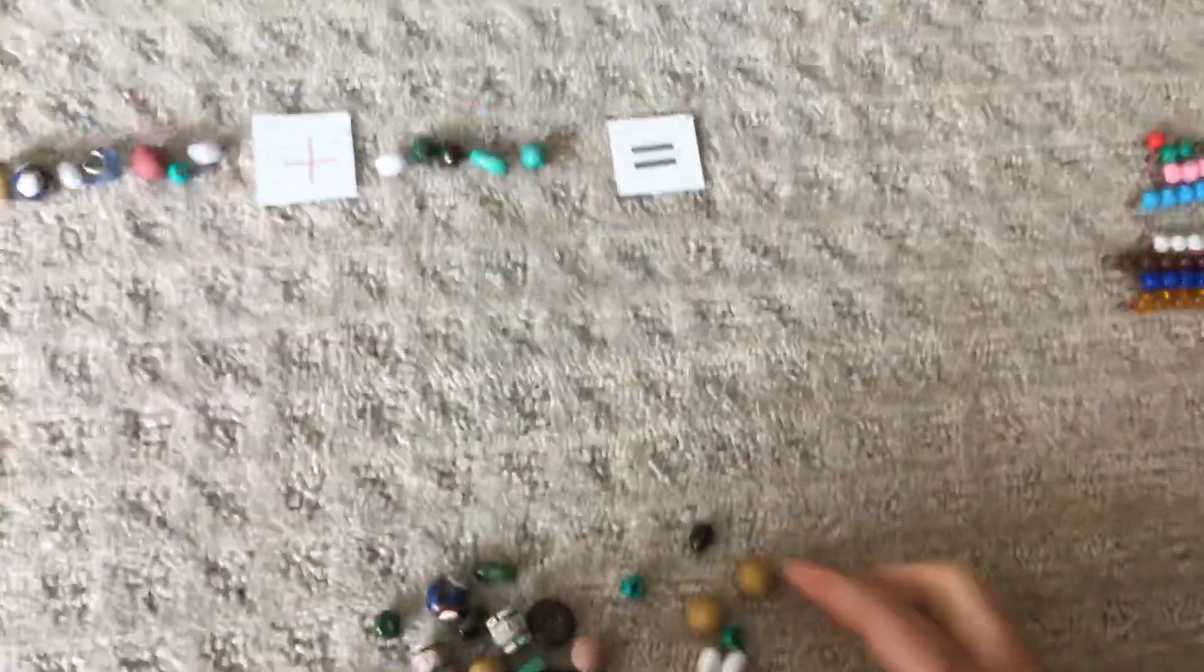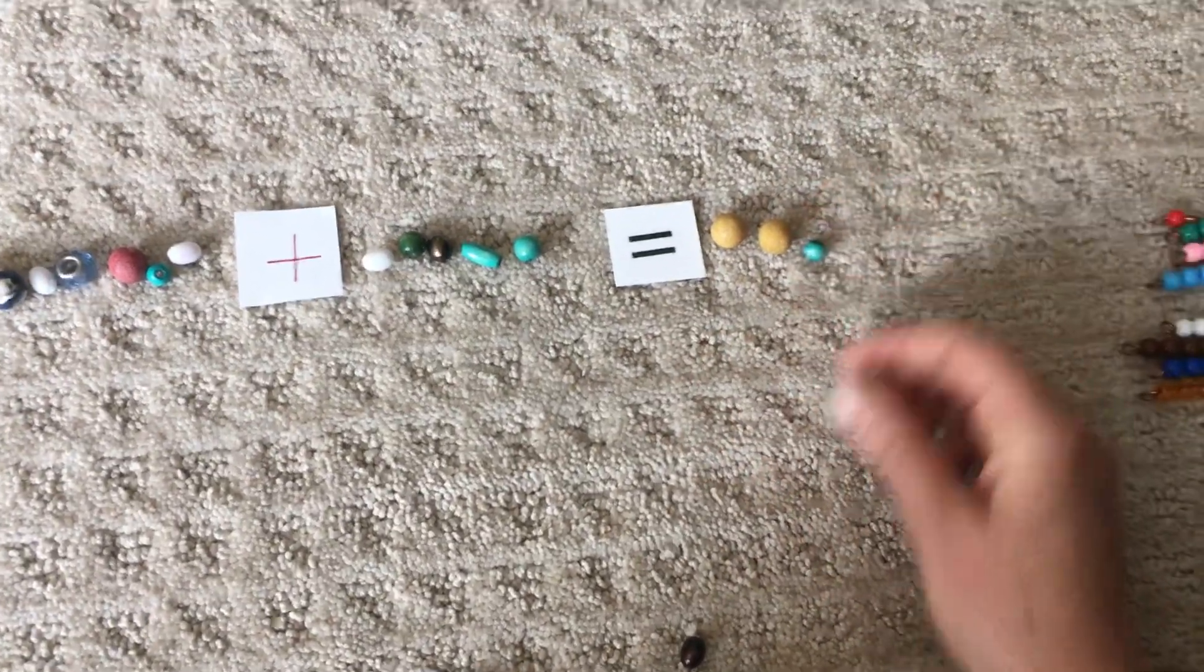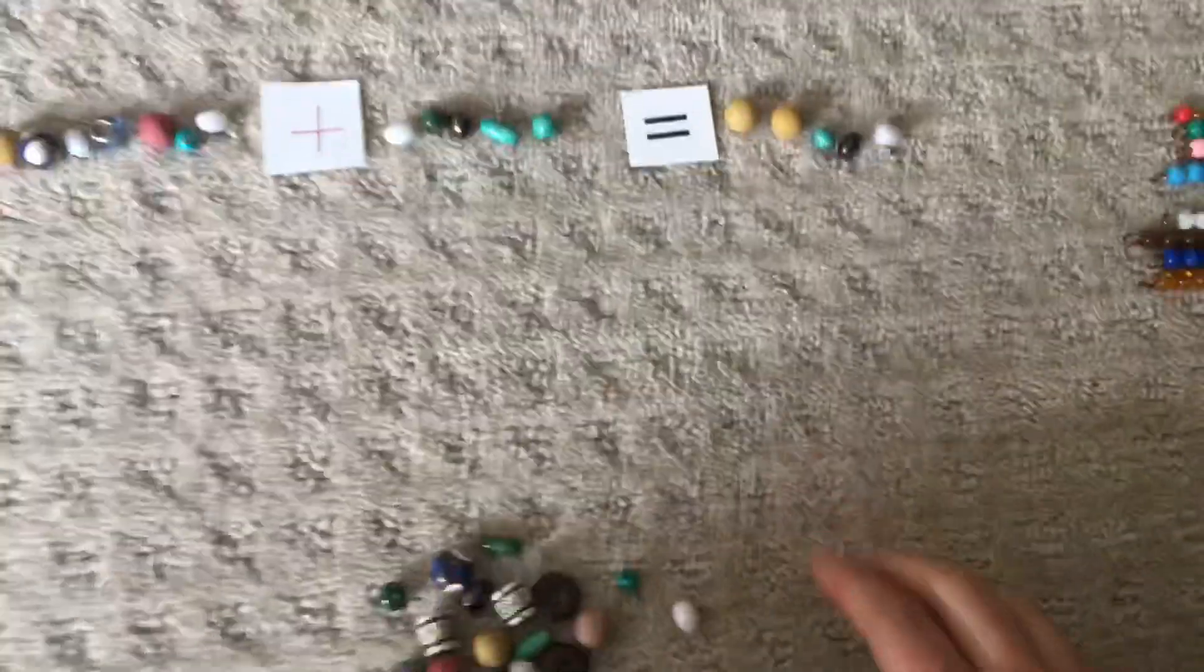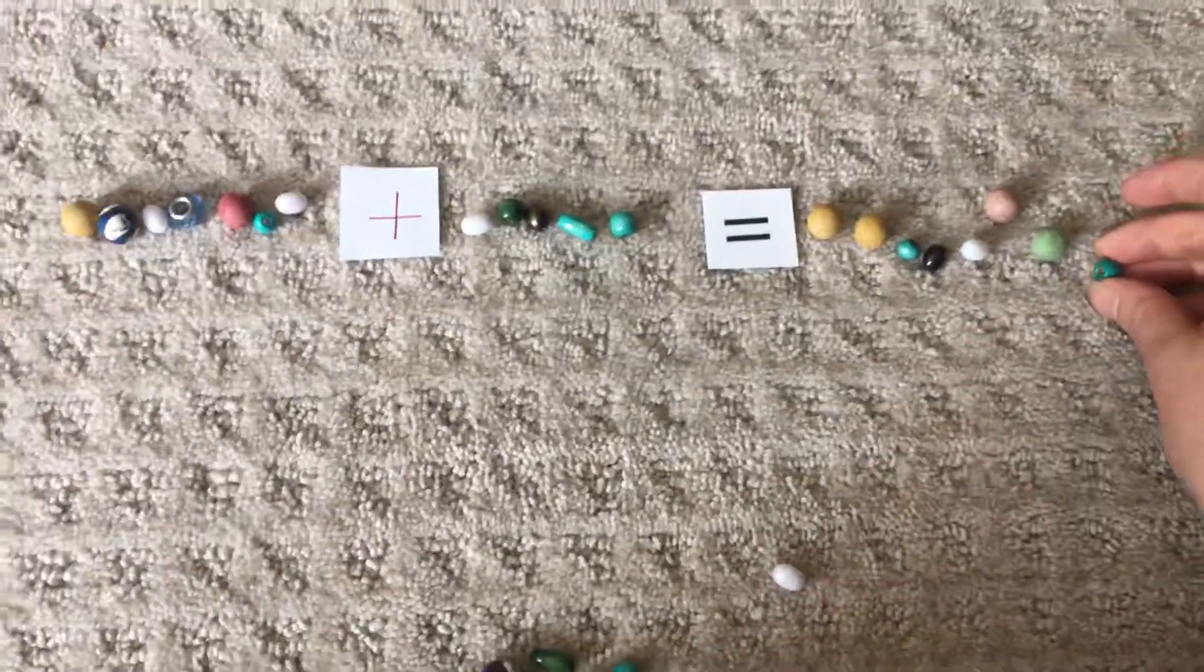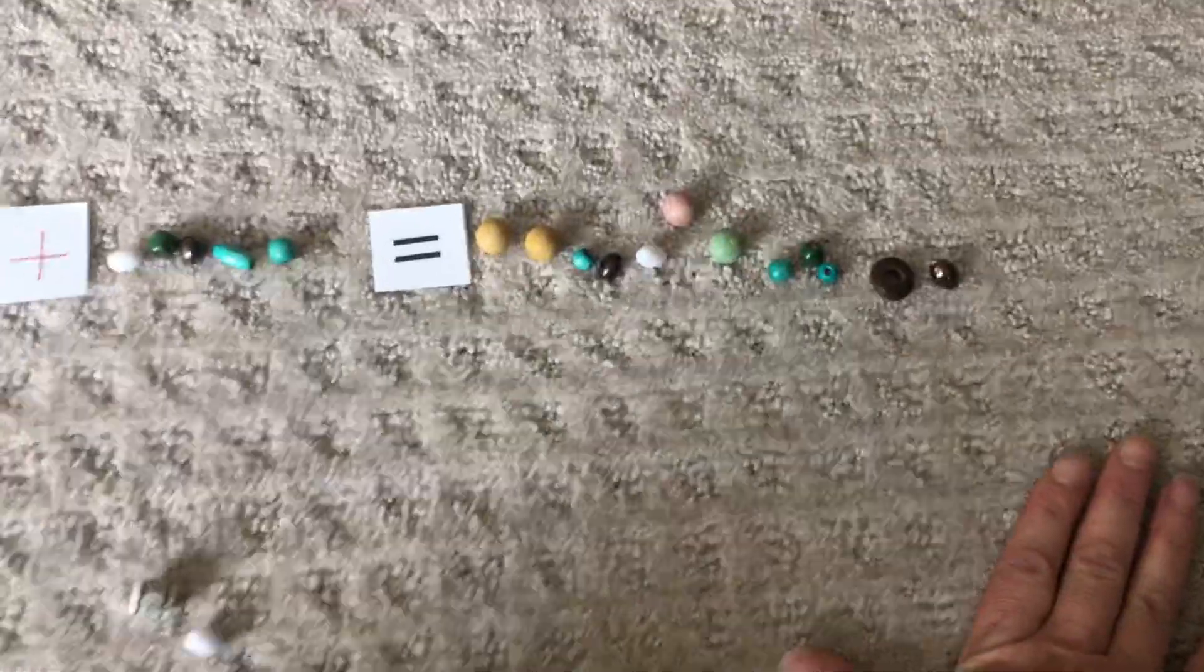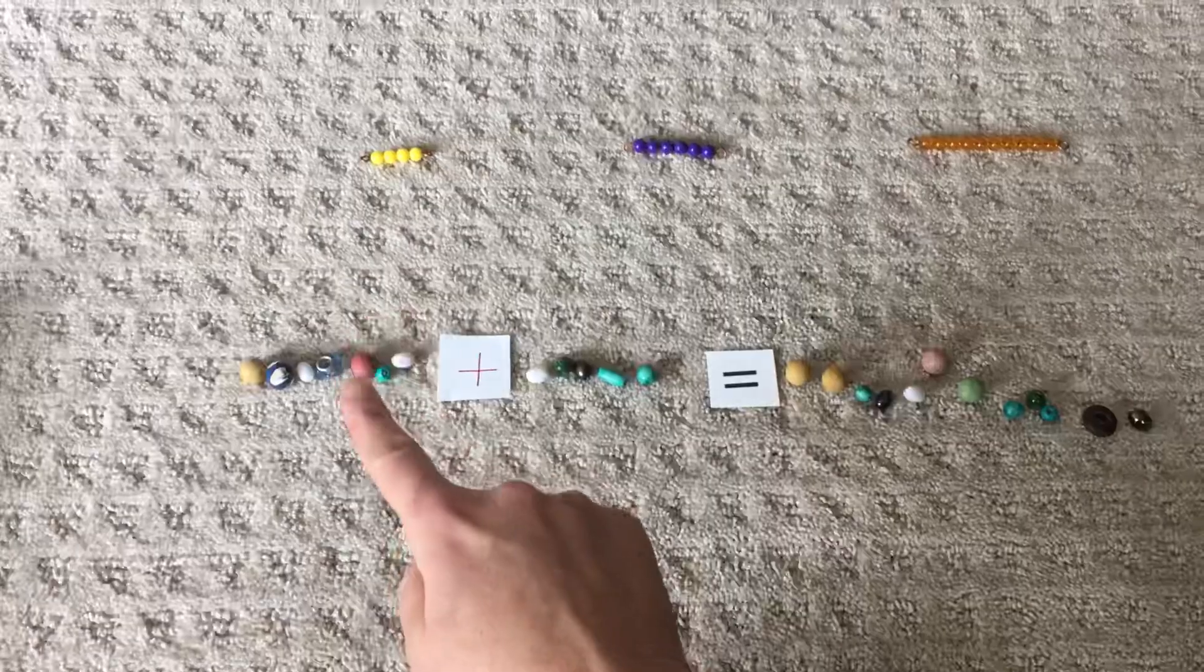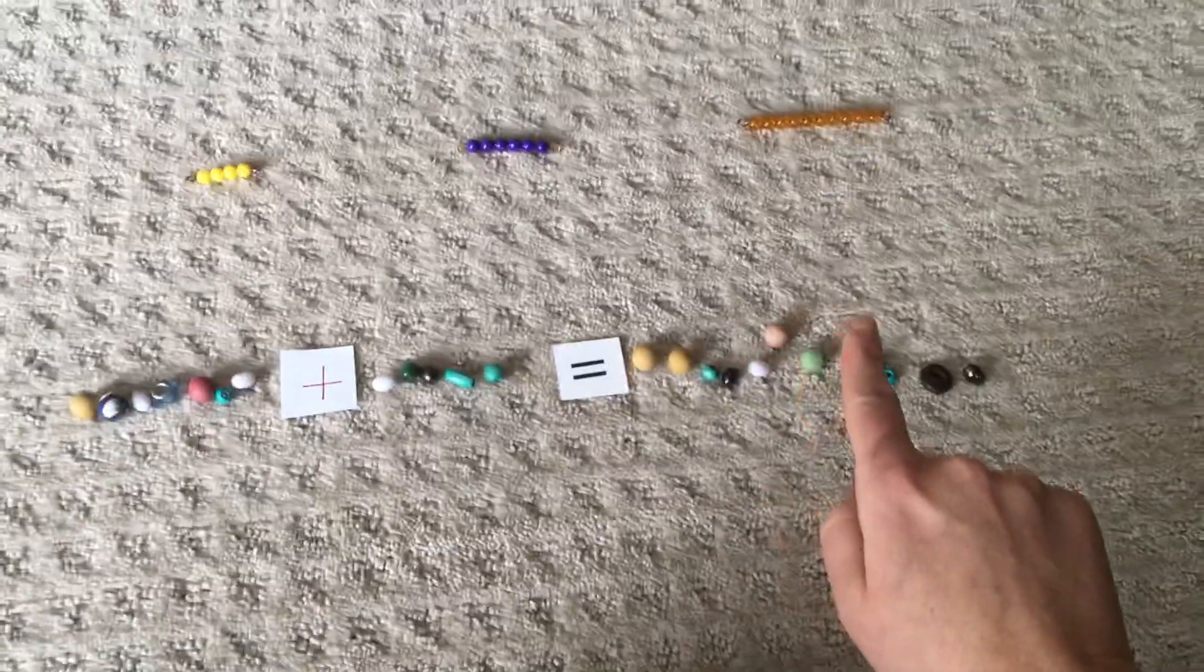And then we have to go over here and count out twelve. All right. One, two, three, four, five, six, seven, eight, nine, ten, eleven, and twelve. Wow. That's a lot all together. So we know seven plus five equals twelve.